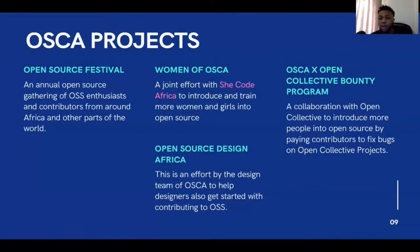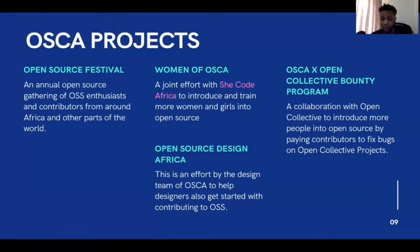OSCAR and the Open Collective Bounty Program: Open Collective is a platform where open source communities can be transparent about their spending and income. We collaborated with Open Collective to introduce more people to open source by paying contributors to fix bugs on Open Collective projects. On the Open Collective GitHub repo, there are various packages and repos where developers can come in, fix bugs, and get paid — every issue has a price tag. Clone the repo, fix the bug, push the commit, and once it's merged, you get paid.